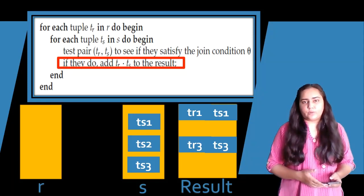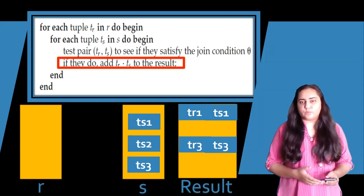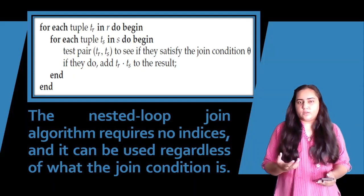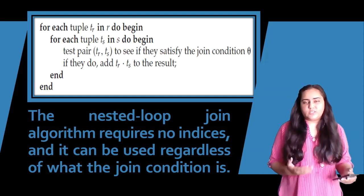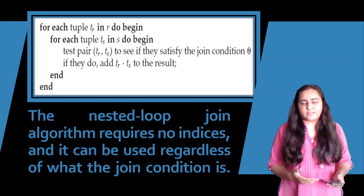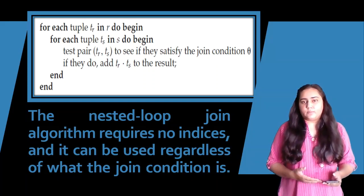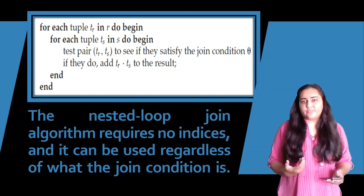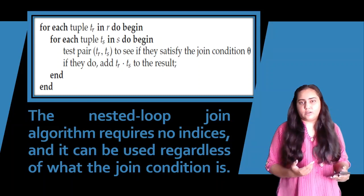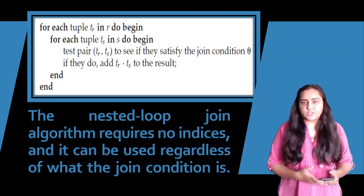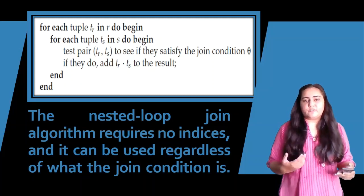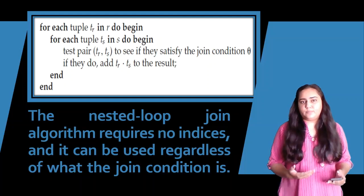This is the basic join operation in a database management system. This algorithm requires no indices and can be used regardless of what the join condition is, since the condition theta is very general — it could be equal to, greater than, less than, or any combination. Even if you don't have B-trees, B+ trees, or hashed indices on your columns, you can still perform a nested loop join.